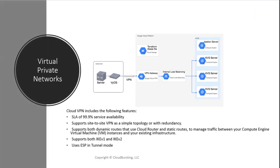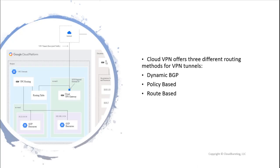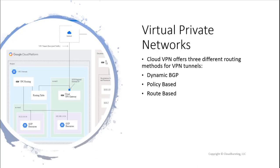Cloud VPN is a managed service with a 99.9% SLA. It is a site-to-site VPN that supports both dynamic and static routes. If you use static routes, you'd want to use Cloud Router. It supports IKE V1 and V2 and uses ESP in tunnel mode. In the diagram, you have your on-site VPN server connecting to Google Cloud via a VPN gateway.